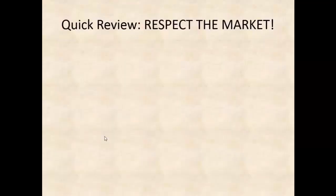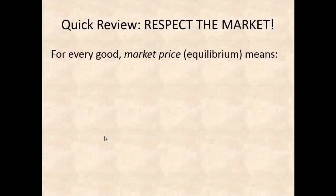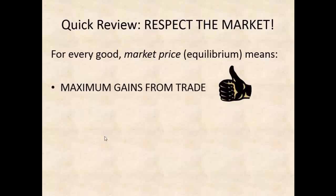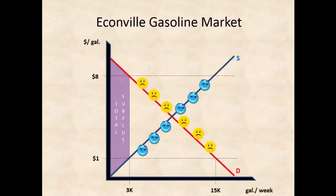First I want to briefly review what we've discussed so far in terms of markets for individual goods and equilibrium prices. Remember, equilibrium means that we maximize the gains from trade. We can visualize that in terms of the surplus triangle. And if you remember from our equilibrium lecture, if the price was above or below equilibrium in the Econville gas market, we had the quantity reduced to 3,000.